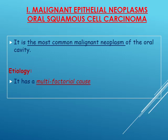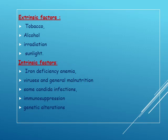We will start with oral squamous cell carcinoma, which is the first of the malignant epithelial neoplasms. It is the most common malignant neoplasm of the oral cavity. The etiology has a multifactorial cause. Factors related to oral squamous cell carcinoma are divided into extrinsic factors — such as alcohol, tobacco, sunlight, or radiation — and intrinsic factors such as iron deficiency, anemia, immunosuppression, malnutrition, and candida infections. Leukoplakia can arise on top of candidiasis.